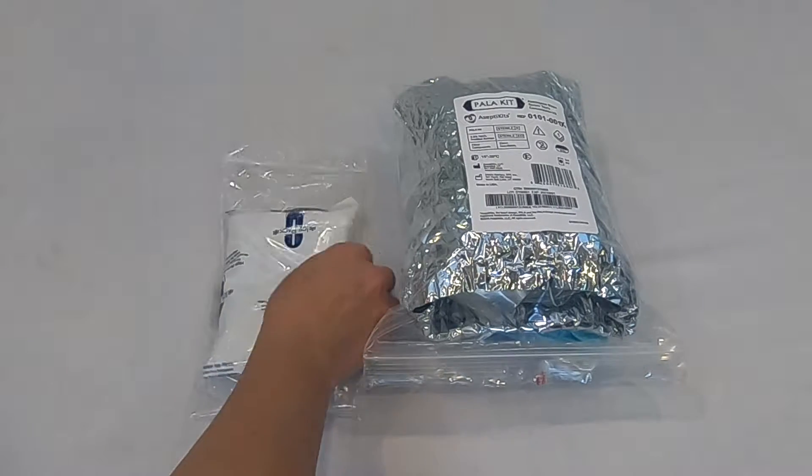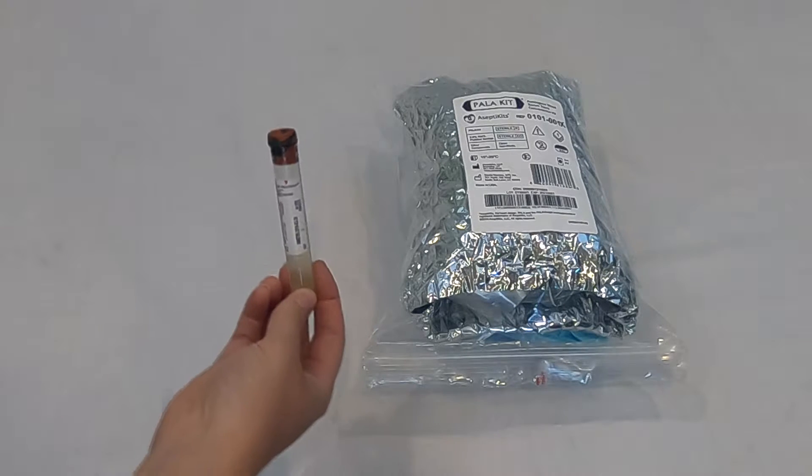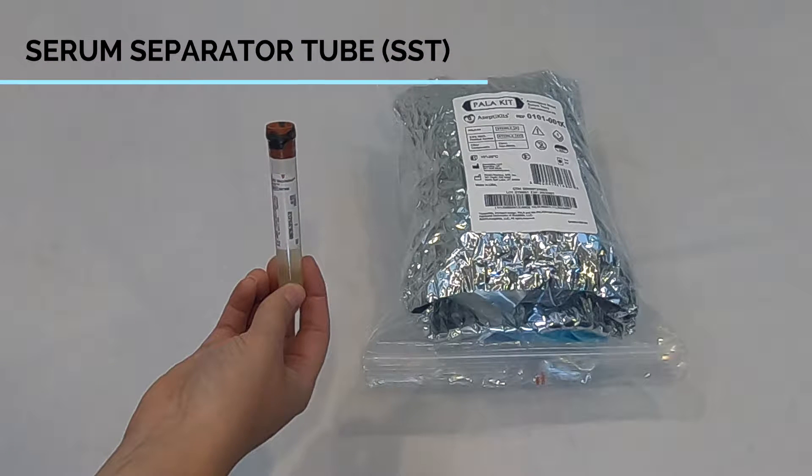When you receive your product, immediately remove the freezer packs and freeze them. Next, collect the prescribed volume of blood using a serum separator tube, also commonly referred to as tiger tubes or gold top tubes.